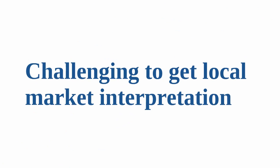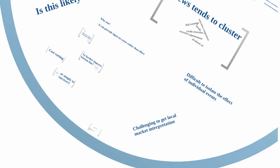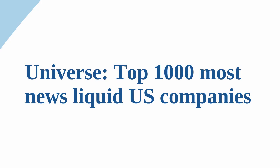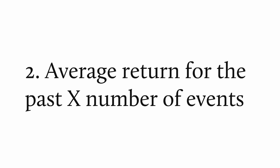Furthermore, having a one-month investment horizon, we also have to decide on what return horizon to evaluate when constructing the market response signal. If we decide that this should be based on one-month returns, we cannot consider any events that have taken place over the past month, making it very challenging to get a local market interpretation. First, you need to define a universe of stocks. I consider the top 1,000 most news-liquid companies year by year — by news-liquid, I mean companies that have relevant and novel news about them. Take the average stock return over the past X number of events of a given type across your entire universe. I find that shorter windows work best — more specifically, between 10 and 30 events, which tends to capture less than a week's worth of data, at least for the most frequently occurring events.